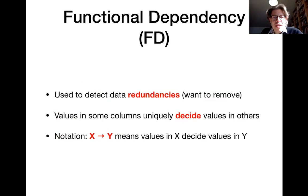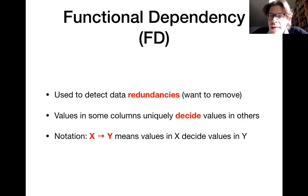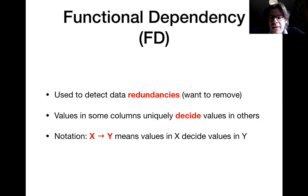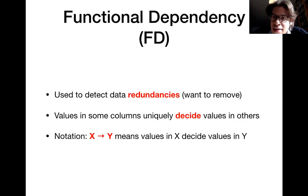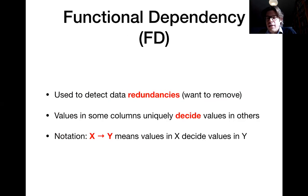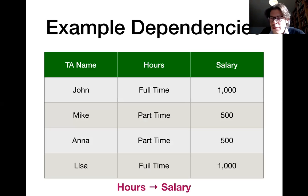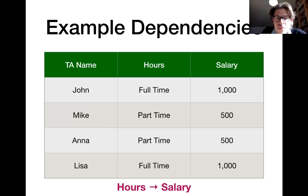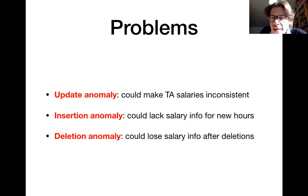We have been discussing functional dependencies. As a reminder, a functional dependency just means that the values in some set of columns imply the values in some other set of columns. You write them as X implies Y, where X and Y are sets of attributes. The semantics is that if you know the values in X, then you also implicitly know the values in Y. If you have those functional dependencies within one single table, it means you could store redundant information, and that has various disadvantages.